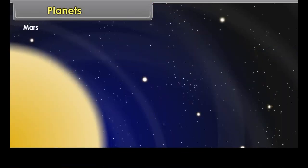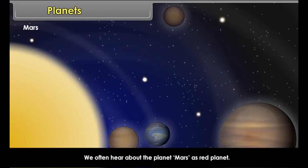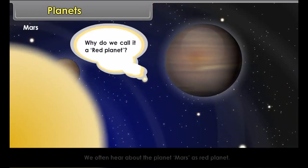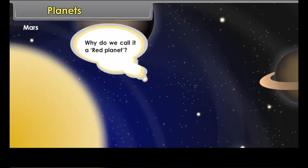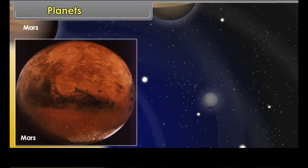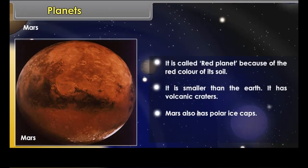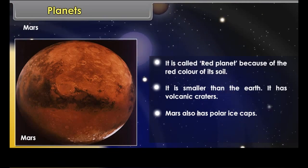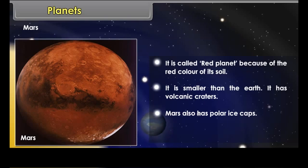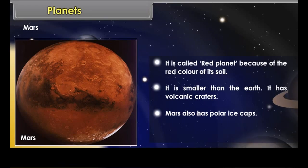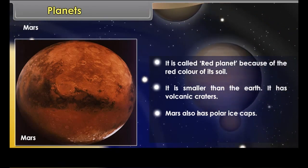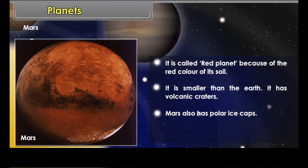Mars is often known as the red planet. It is called the red planet because of the red color of its soil. It is smaller than the Earth, has volcanic craters, and also has polar ice caps.